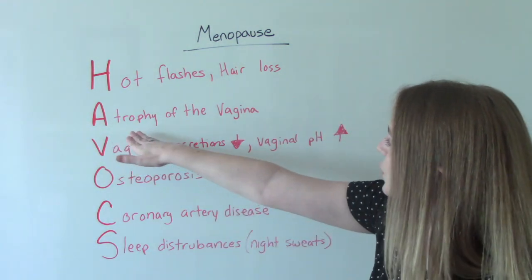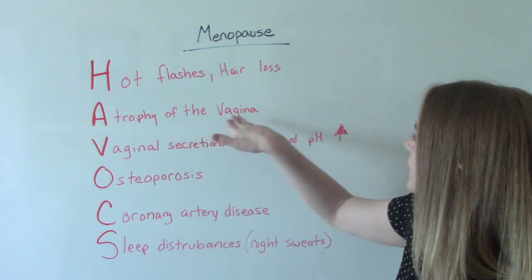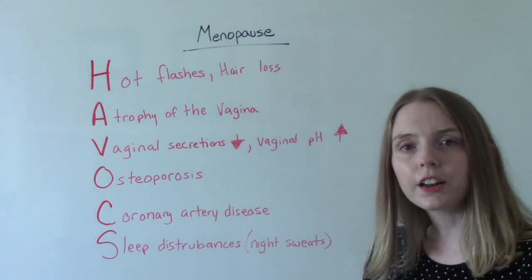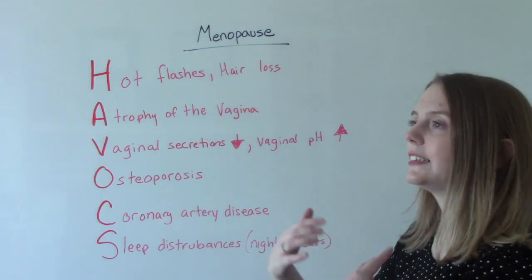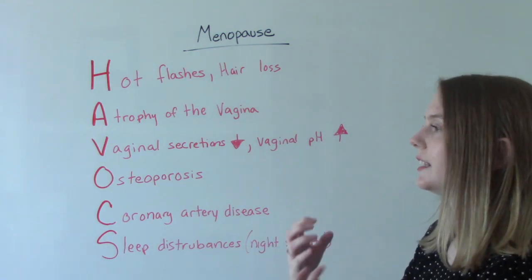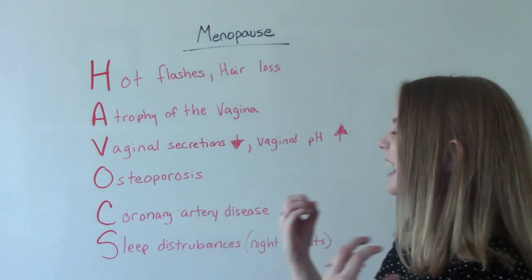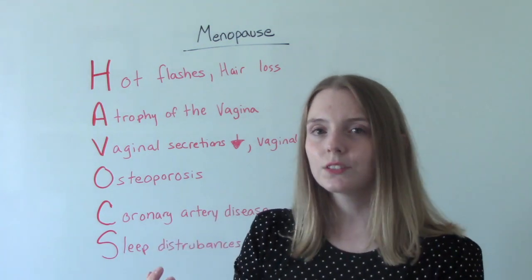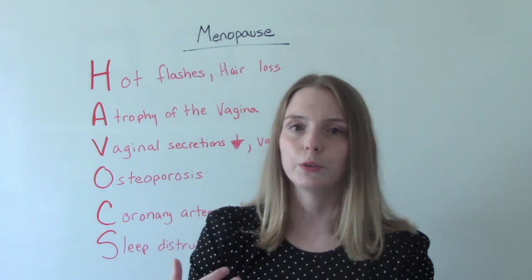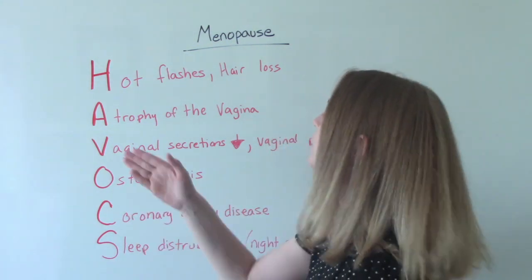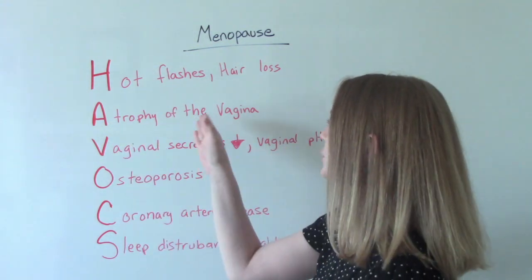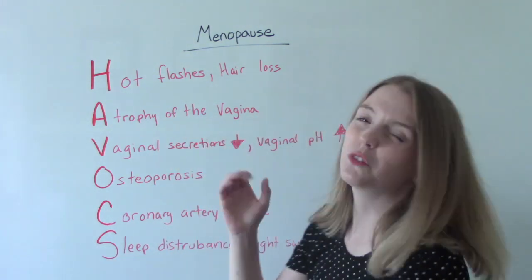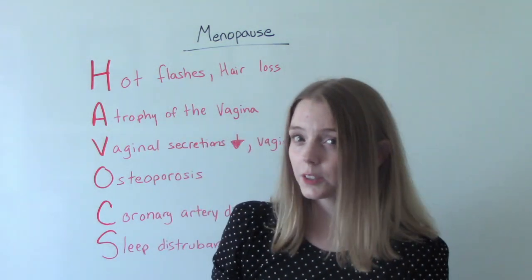A is for atrophy of the vagina. That decreased estrogen causes a decrease in elasticity and dryness in the skin and mucous membranes, which can lead to atrophy of the vagina and things like painful intercourse.